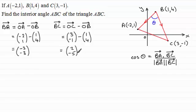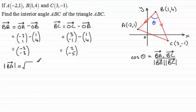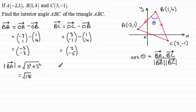We've got our two vectors. I'm going to get the magnitudes as well at this stage. The magnitude of BA is the square root of the sum of squares of its components: that's √(3² + 3²) = √18. Similarly, the magnitude of BC is √(2² + 5²) = √29.